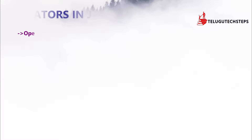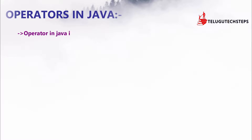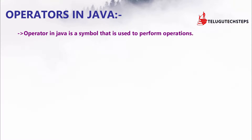Let's talk about the operators in Java. What is an operator? An operator in Java is just a symbol. This is a symbol that is used to perform operations. We can use it in calculations, projects, and applications. We can perform an operation or a functionality.